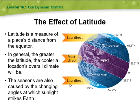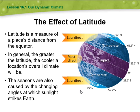The seasons are also caused by the changing angles at which sunlight strikes the Earth. We have 0 degrees, which is the tropical area; 23.5 degrees north and 66.5 degrees north in the temperate zone; and 90 degrees north for the polar region. Moving downwards, we also have 23.5 degrees south in the temperate zone, and 66.5 and 90 degrees south for the polar region.